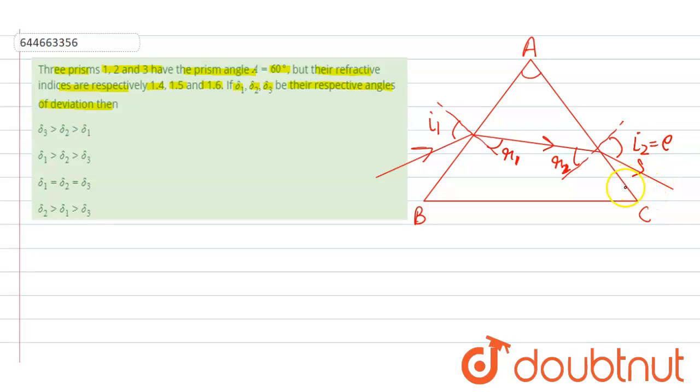This is emergent light ray and on producing the incident light ray forward and the emergent light ray backward, this angle is called angle of deviation. Here del is called angle of deviation.